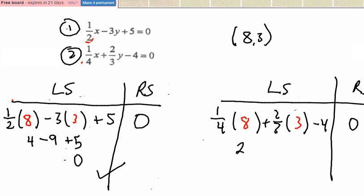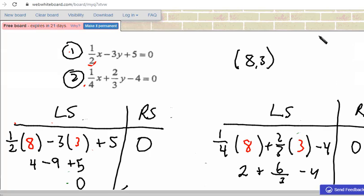So 1 quarter of 8 is 2. Here I would say plus 2 times 3 is 6 divided by 3. So that 6 divided by 3 is just 2. So I'm left with 2 plus 2 minus 4 is 0. So the left side right side check worked. So that means that I'm pretty confident that I have the right answer. Thanks for watching.